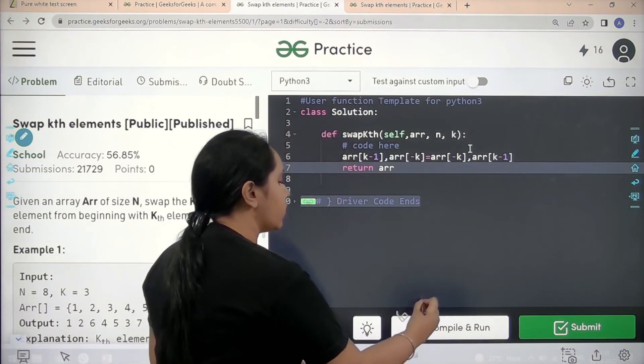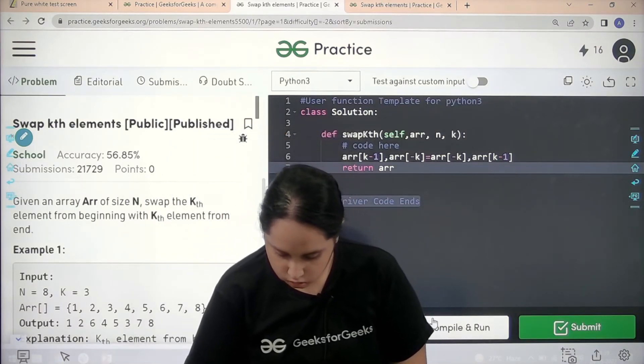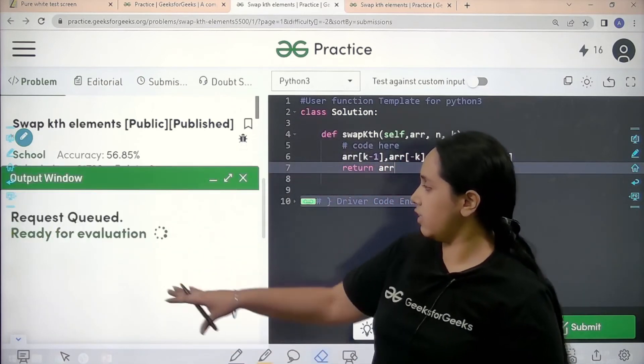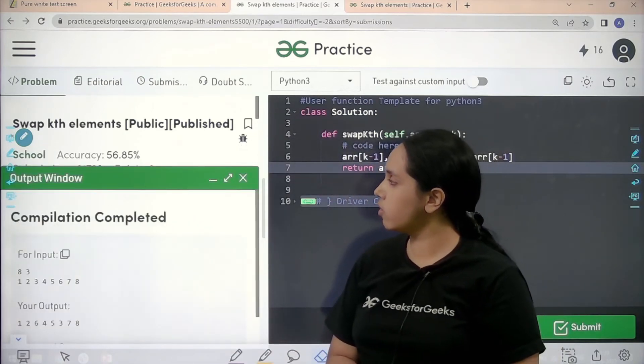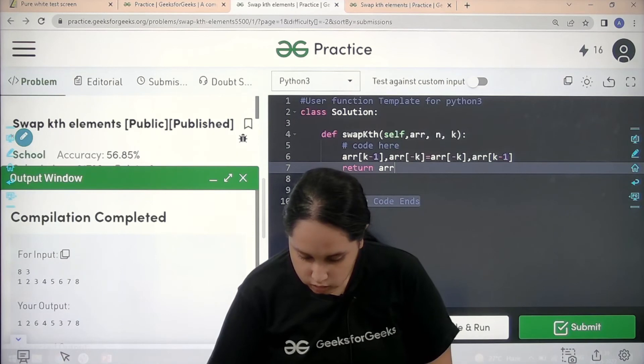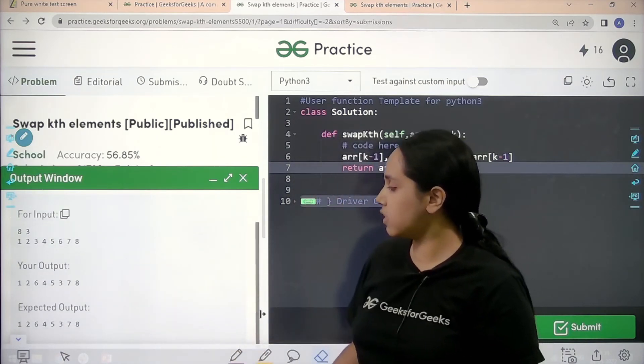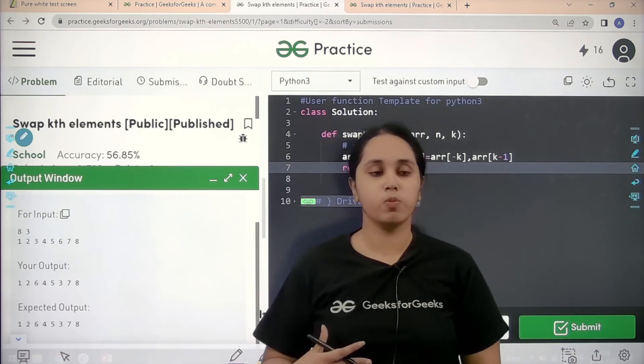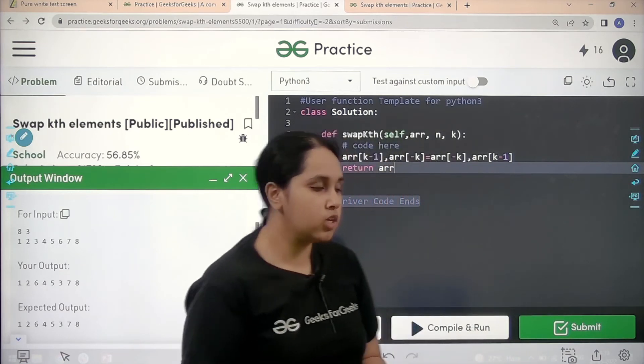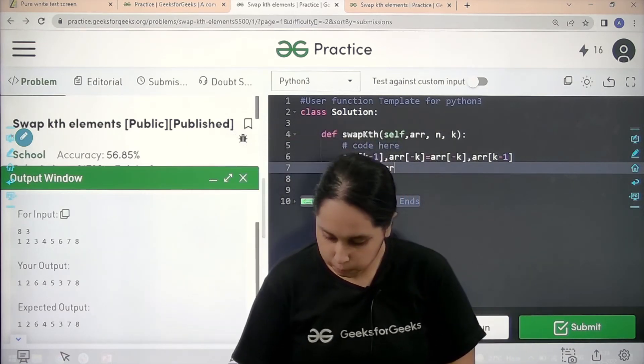So first I will click on compile and run. So let me click on compile and run and let's see. Now the compilation is completed. Let me check if my output is matching with the expected one or not. So see, my output is matching with the expected output.